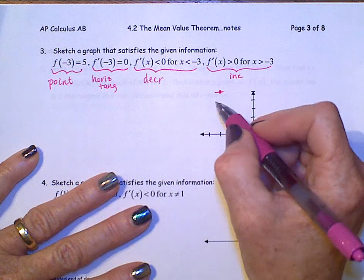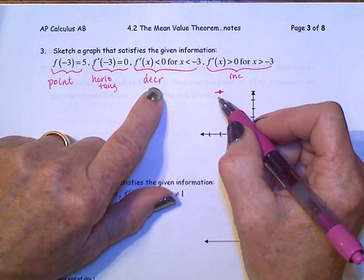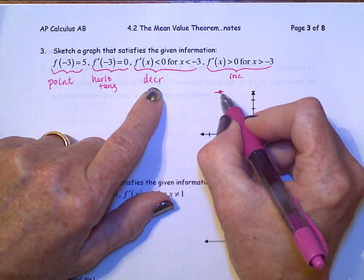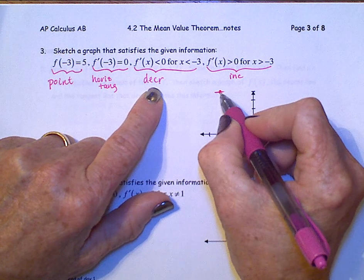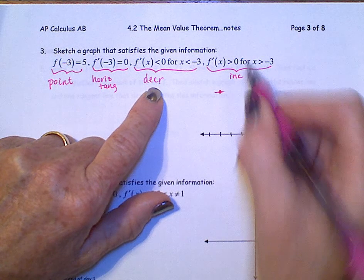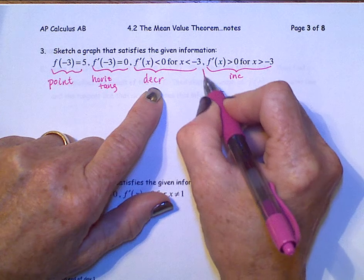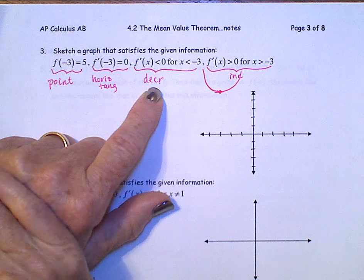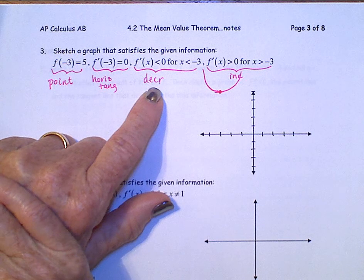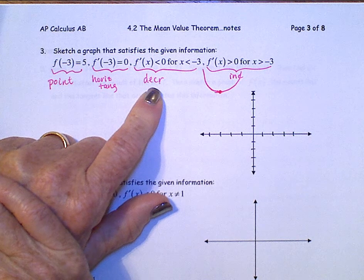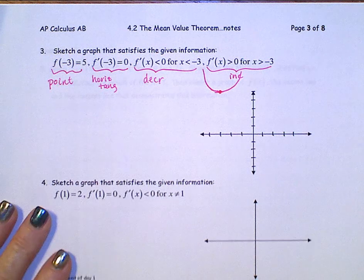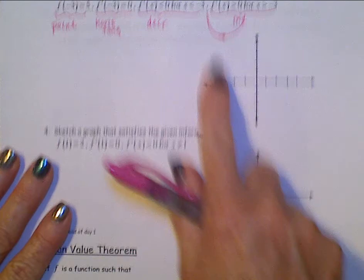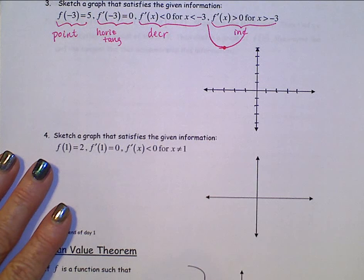So if we think about what has to happen, we need a decreasing function that's going to gradually change into this horizontal tangent and then turn into increasing on the other side. How about something like that? And that's it. That's all there is. I'm way off the graph here, but it's because of the scale.